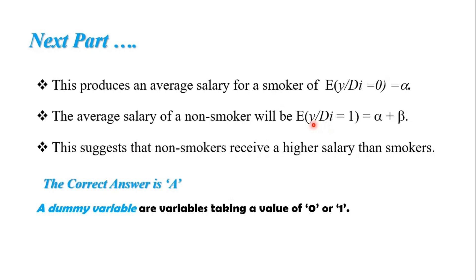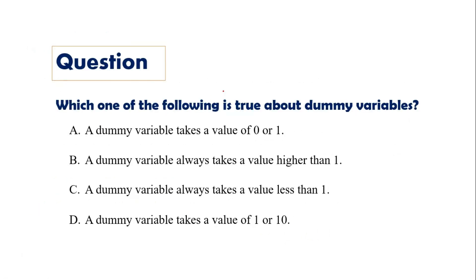When we come back to that question about the true statement regarding dummy variables, they are variables taking a value of 0 or 1, and the correct answer is A. From the given alternatives, the true statement about dummy variables is that a dummy variable takes the value of 0 or 1.